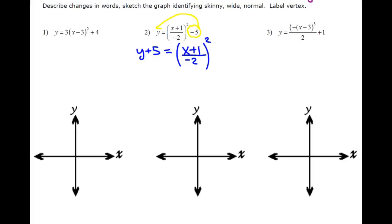Now, any reflections? Well, I do have a negative with the x, so that means I'm going to reflect over the y. My vertex for this one is going to, because of that plus, it's going to move to the left one. And because that's a plus, that's going to move it down five. So my vertex here for this one is going to be negative one, negative five.